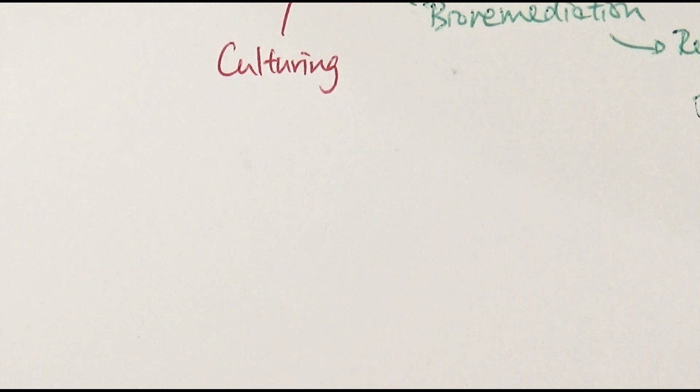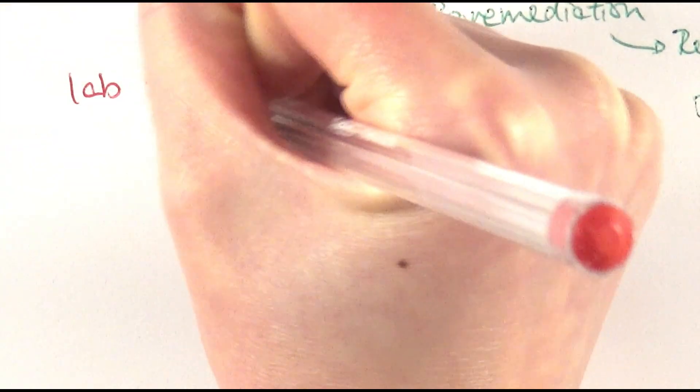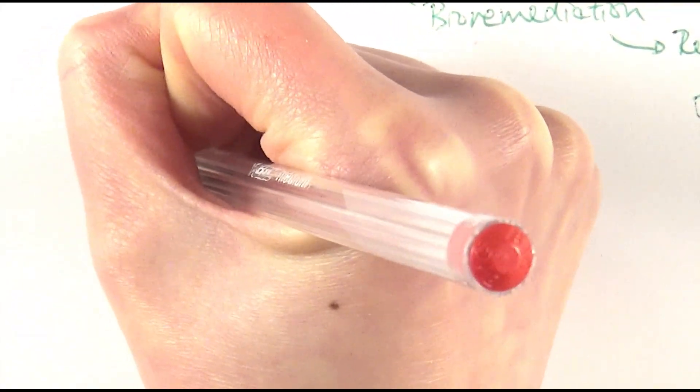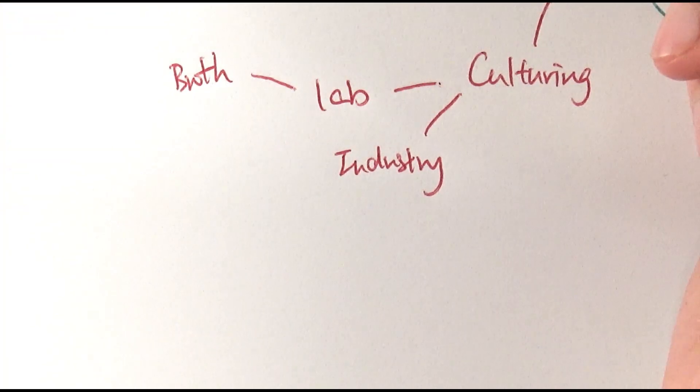Then we're going to think about culturing. It's quite a big part of biotechnology, most of the stuff you need to know is within this sector. First of all, be aware we can consider culturing in two different settings. One will be in a lab setting, and the other in an industry setting. You might have done an experiment in the lab where you have to culture bacteria, one of the required practicals. We can do it using broth, which is basically a liquid way of culturing bacteria.